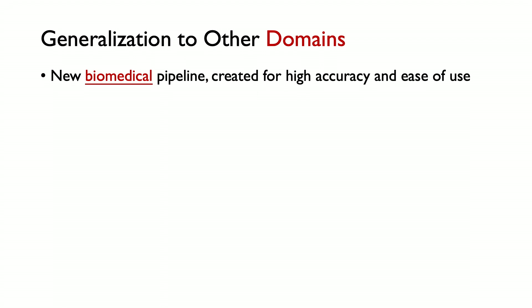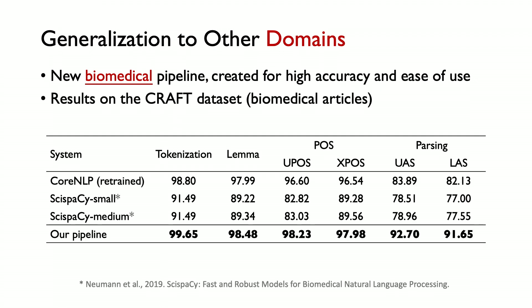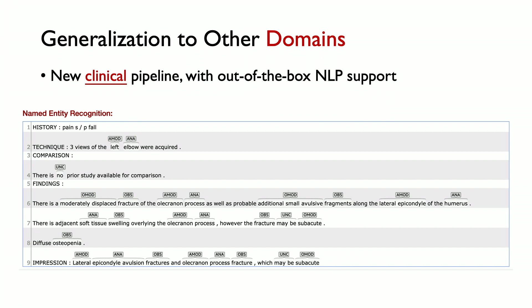The data-driven approach in this library not only allows generalization to different languages but also to different domains. We have created a new biomedical NLP pipeline for analyzing biomedical text with high accuracy and ease of use. We trained and evaluated it on the Craft biomedical publication dataset, and comparing with all existing systems in Java and Python, it achieves state-of-the-art performance on all benchmarks. We also created a clinical pipeline specializing in clinical text, where the system can analyze radiology reports and annotate different entities, including anatomies and clinical observations.